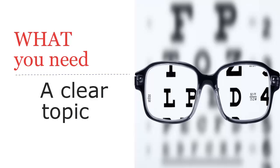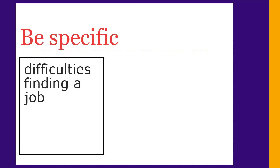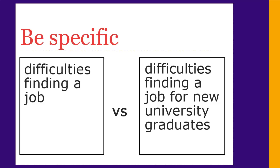To decide what you need to search for, you need a good understanding of your topic. It's important to have a clear, focused topic to make your search easier. Try to make your topic as specific as possible. Often it's hard to find sources on a general topic, but easier for a more specific one. For example, instead of searching for difficulties finding a job, search for difficulties finding a job for new university graduates.